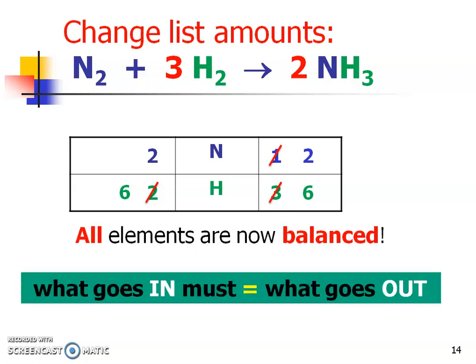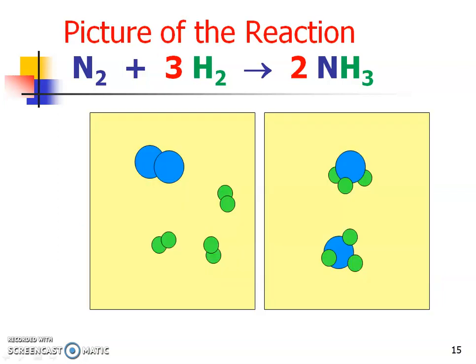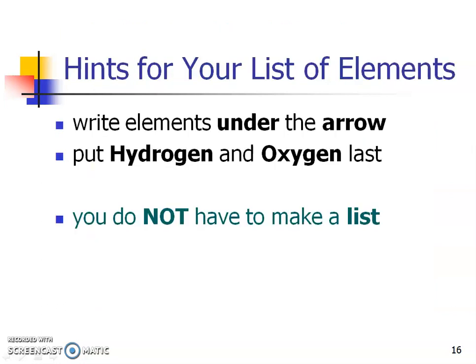Now that we're balanced, I want to remind you of the law of conservation of mass, matter, and energy — whatever goes in must equal what comes out. This is a nice visualization to show those diatomic molecules and how many elements and compounds we need to make that reaction balanced. As a hint, I always list elements under the arrow so you only list them once. Keep those hydrogens and oxygens last in order H, O — oxygen is often on its own, making it easy to balance at the end. After you get used to this, you won't need to make that list every time.